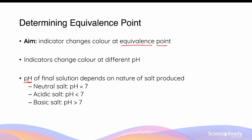The pH depends on the nature of the salt produced. In a different video, I go through different types of salt in more detail. As a review, neutral salts will give you a pH of 7, acidic salts will produce an acidic pH less than 7, and basic salts will give you a pH of solution greater than 7. These numbers are all at 25 degrees Celsius.